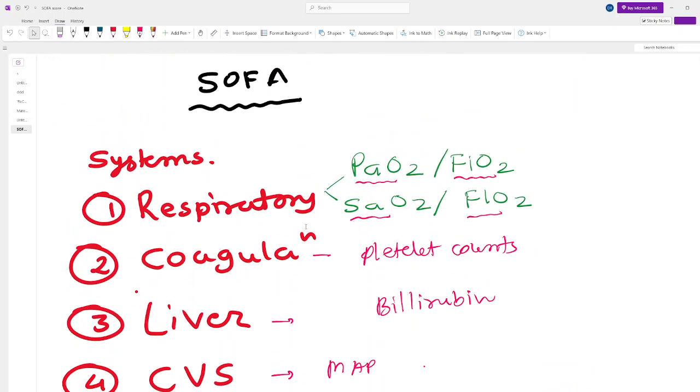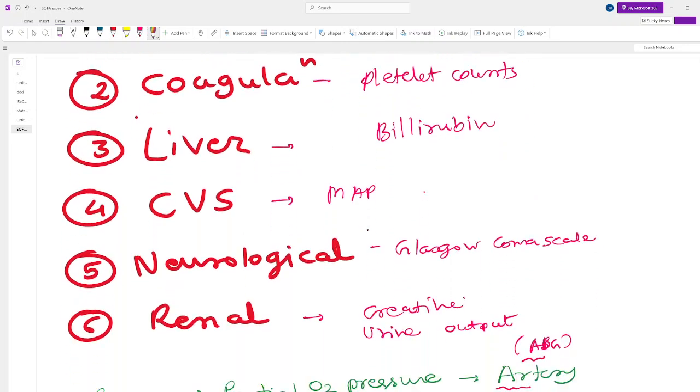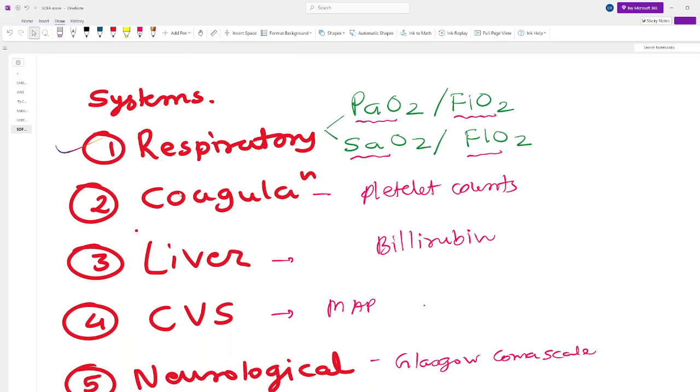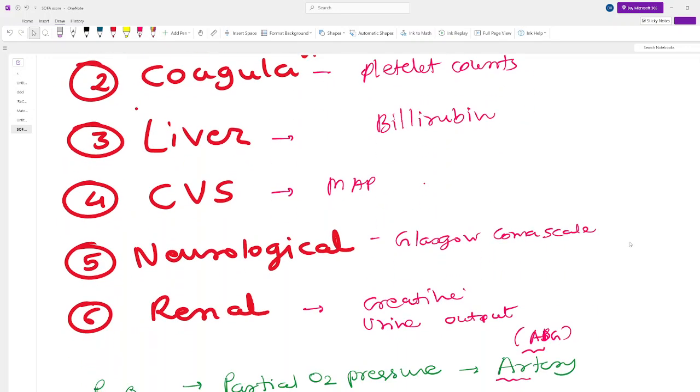Now let's come back to the SOFA score. What we measure in the SOFA score: we measure around six systems. The first one is respiratory, then comes coagulation, then comes the liver, then comes the CVS - that means heart and everything, then comes the neurological system, and then comes the renal system.